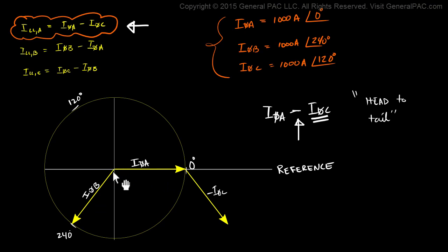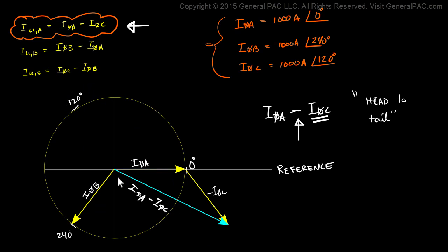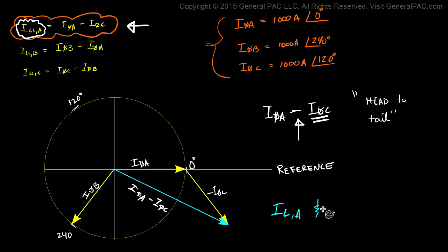The resultant vector starts from the origin and ends at the head of negative phase C current. Notice that the resultant vector is a lot longer now. The resultant vector represents phase A current minus phase C current. And this resultant vector is actually representing this line current here.